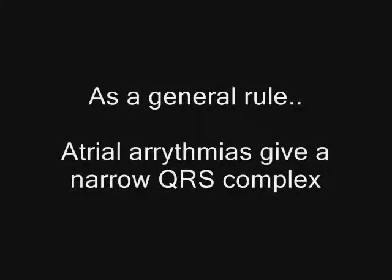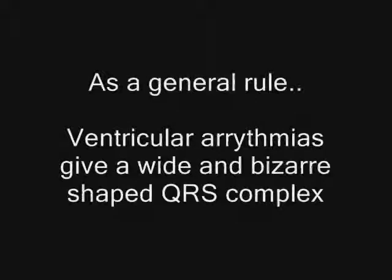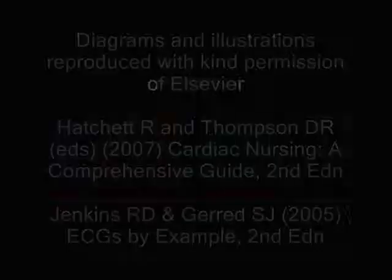Therefore, as a general rule, an atrial arrhythmia will give you a narrow QRS complex, whereas a ventricular arrhythmia, or where there are ventricular conduction problems, will give you a wide and bizarre shaped QRS complex. I'm Dr. Richard Hatchett for FastLearnECG.com.